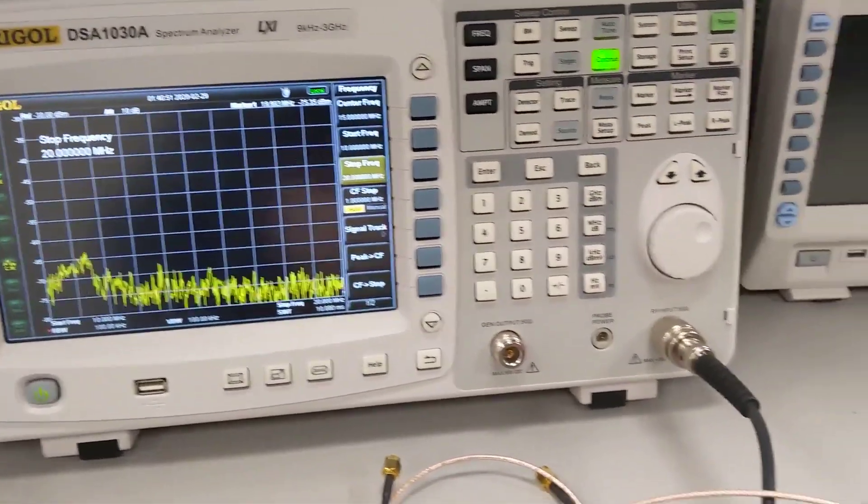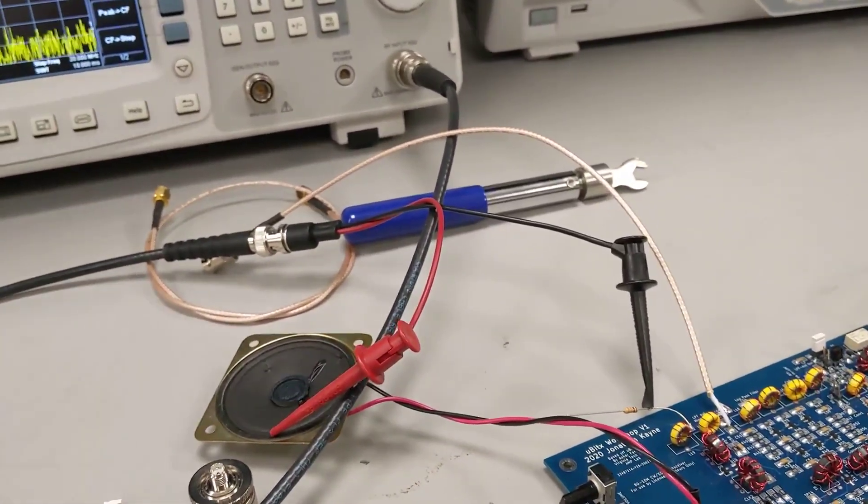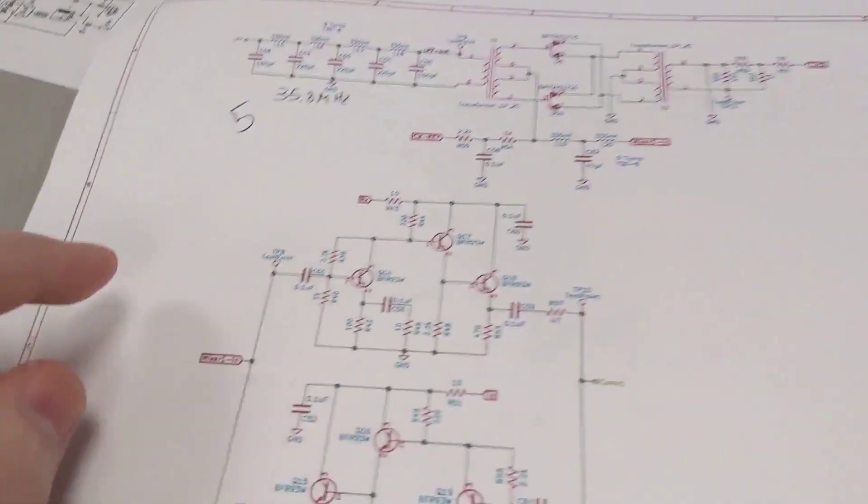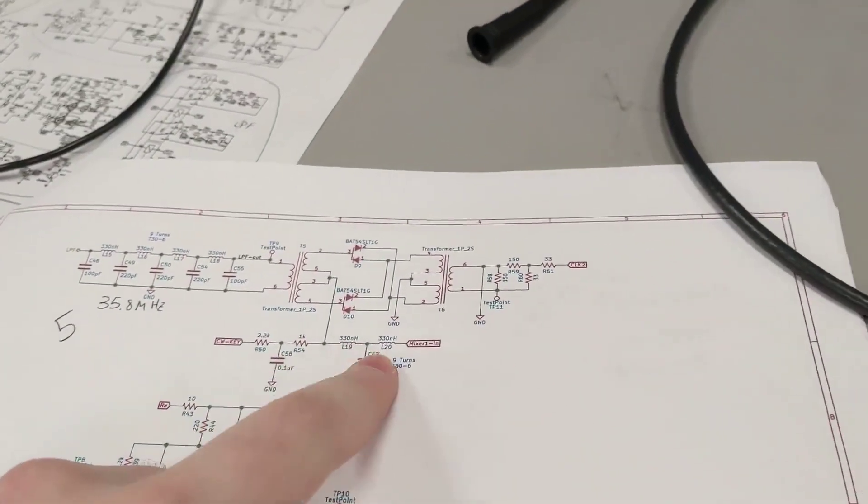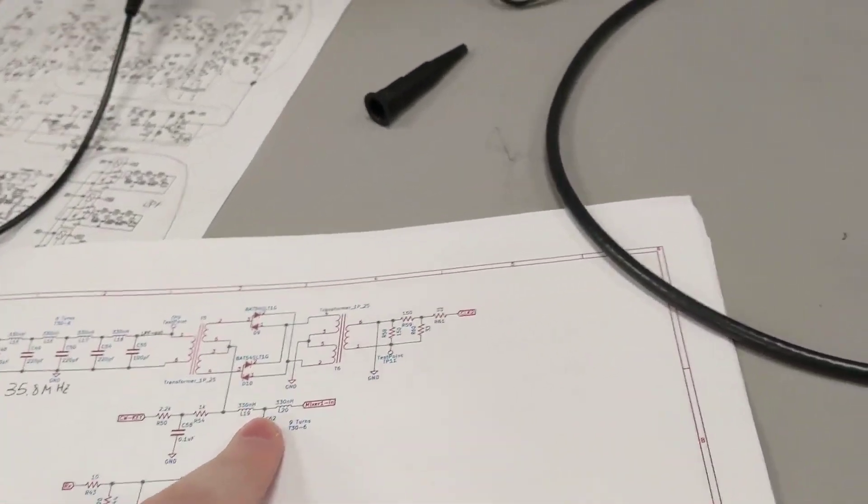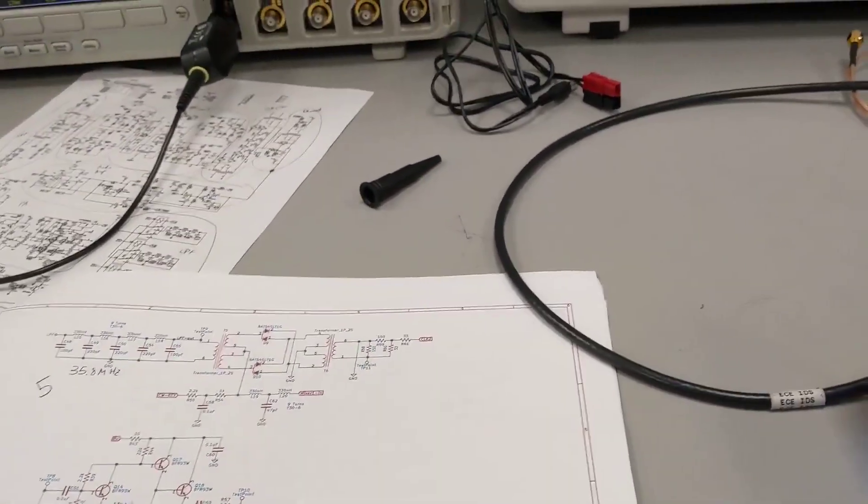And then what I'm going to do is I've got this little piece of coax connected to the local oscillator out. So that's this point right here or the output of this mixer. This is supposed to just remove some harmonics that I produced.